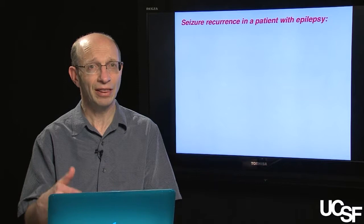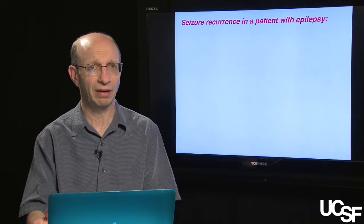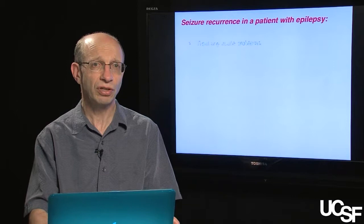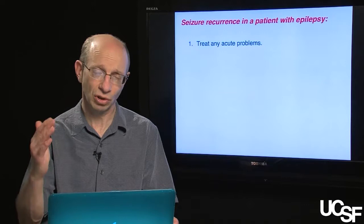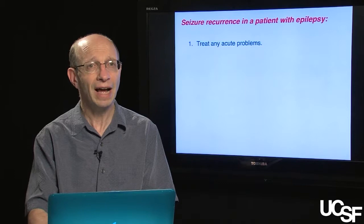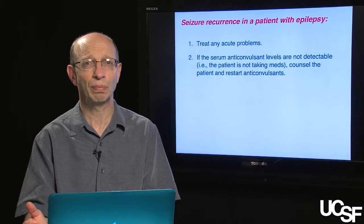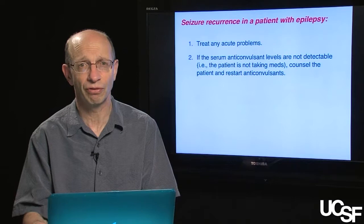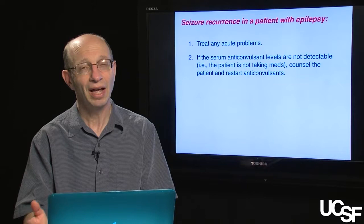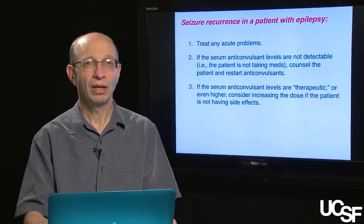Now let's talk about the patient with epilepsy who has a seizure recurrence while already being treated — they've been counseled about precipitating factors and are on an anti-epileptic drug, yet they have another seizure. First, focus on identifying any acute problems that may be the basis of the recurrence, such as an infection that lowers the seizure threshold. Next, determine whether the patient is actually taking their anti-seizure medications properly. Sending off serum anticonvulsant levels is one way to assess this; if levels come back undetectable, the patient is not taking the medications, and counseling on compliance is essential.